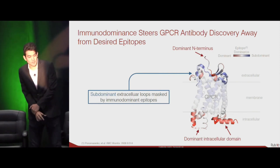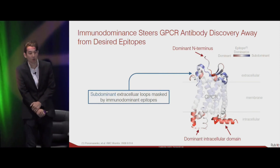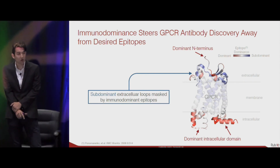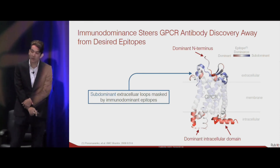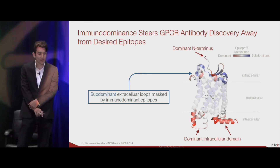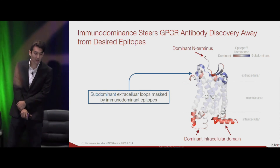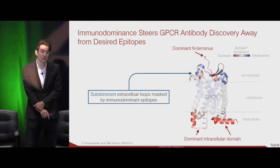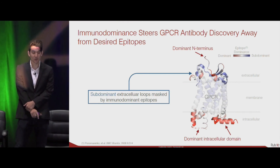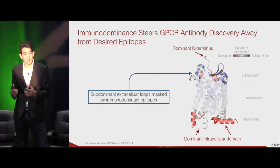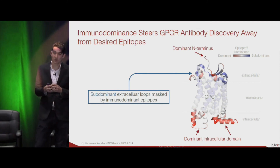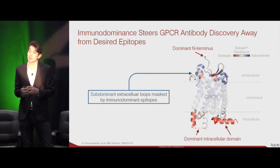In just the last couple of minutes, I want to talk about the future direction of Rubric. We want to move towards more complex, challenging, and higher-value problems. The one we've been eyeing is the GPCR family, because in this family there's a dominant intracellular domain as well as an immunodominant N-terminus at the extracellular domain. These mask our ability with conventional antibody approaches to discover antibodies that bind at the subdominant extracellular loops, which are implicated in modulating GPCR activity.